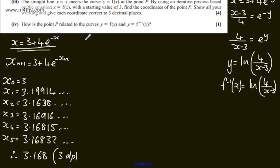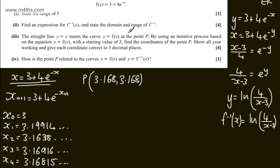My solutions, or my coordinates, will have the point P at 3.168 comma 3.168. If we look at this, it's on the line y equals x, so the x and y coordinates will be the same.